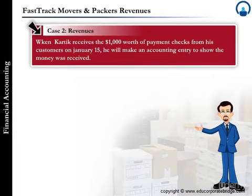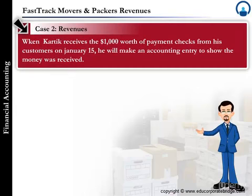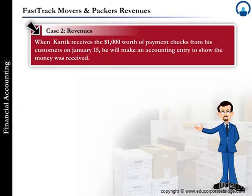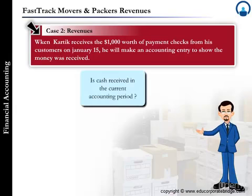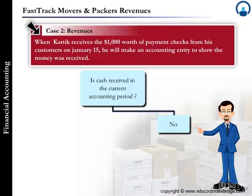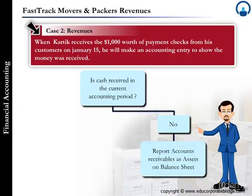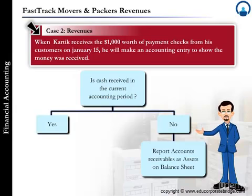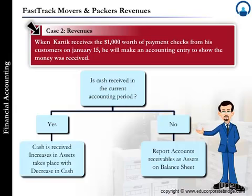Now let us look at Case Study 2. When Karthik receives the $1,000 worth of payment checks from his customers on January 15, he will make an accounting entry to show the money was received. Since cash was not received in December, receivables will be recorded as assets for December. When the payment arrives on January 15, the accounting entry shows cash received and receivables assets decreased.